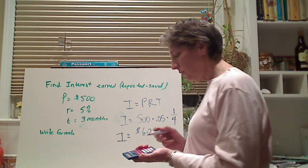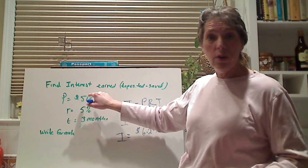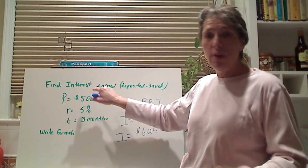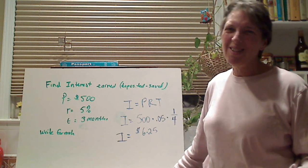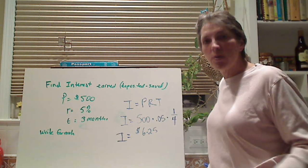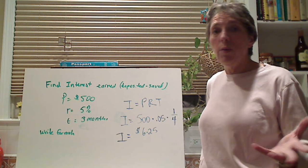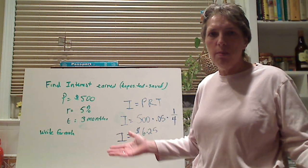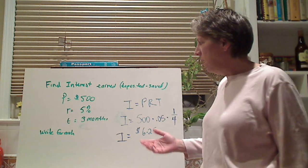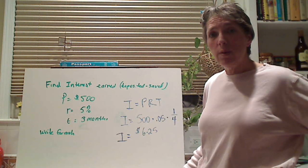So at the end of three months, I would not only have my $500 in the bank, or the institution that I've invested in, but I'd have an additional $6.25. Doesn't sound like much. That's why people shop around for their best investment. The stock market, you can say, well, I can put my money in there and make more money, but there's a greater risk. If I put it in there and just let it sit, it's going to make $6.25 at the end of three months.